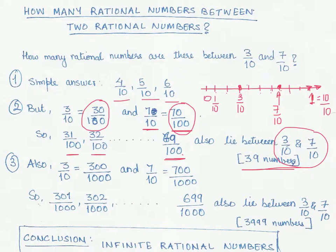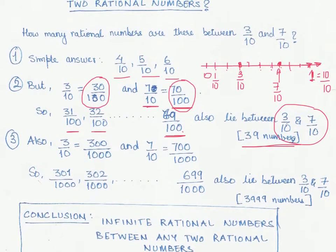So far so good. We have more numbers than what we think. What happens if we were to go even further and say that I could also write 3 by 10 as 300 by 1000 and 700 by 1000.